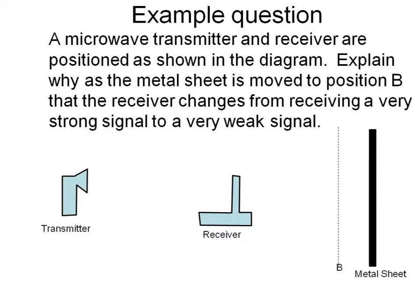Returning to our example question, the first thing is: can we split the question into two smaller questions? This one splits quite easily. We can explain why the metal sheet in its original position gives a very strong signal at the receiver, and then our second question would be: why does moving the metal sheet to position B give a very weak signal at the receiver? In the rest of the video I'm going to concentrate on explaining the first of these — why we get a very strong signal when the metal sheet is in its original position.